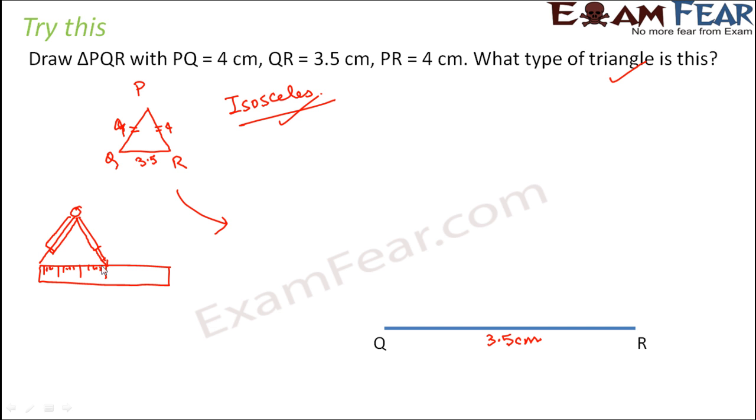This is the compass. You measure 4 cm and you adjust the opening of the compass such that the opening of the two ends of the compass is equal to 4 cm. Now once you have taken that measurement in the compass, from point Q you draw an arc, again from point R you draw an arc. Why with the same opening of the compass? Because both the sides are equal, both are 4 cm.